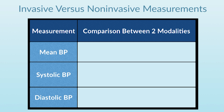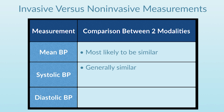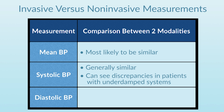When comparing the two modalities, the mean is most likely to be similar. The systolic is generally likely to be accurate, although there are likely to be large discrepancies between the systolic obtained by a non-invasive cuff and that obtained by invasive monitoring when there's a lot of whip or a big spike on the A-line trace. The diastolic obtained by non-invasive monitoring tends in many circumstances to be substantially different from that obtained by invasive monitoring, due entirely to the method by which non-invasive blood pressure is determined.